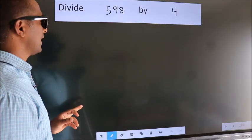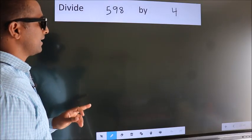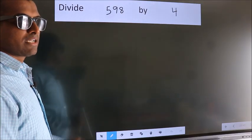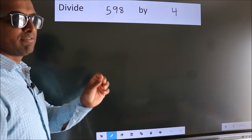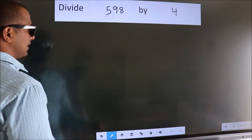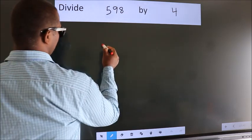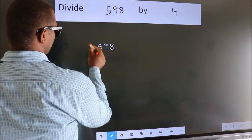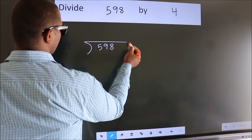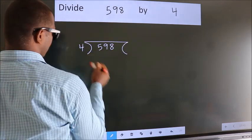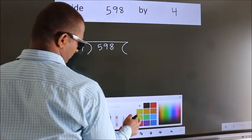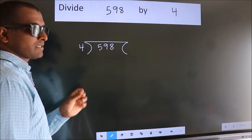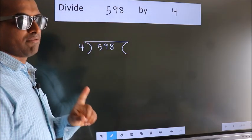Divide 598 by 4. To do this division, we should frame it in this way. 598 here, 4 here. This is your step 1.